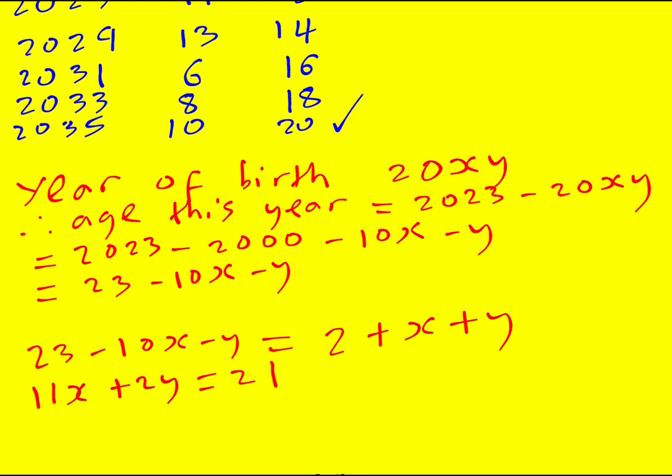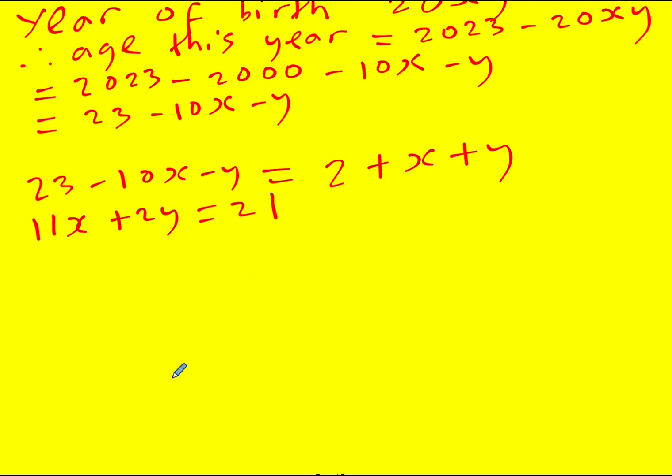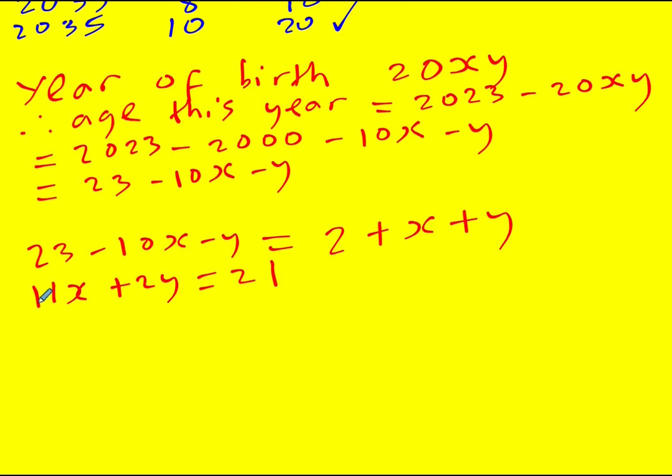Now remember x and y are single digits. It can't possibly be that x is zero, it also can't possibly be that x is two because it would be too big. They have to be positive, so x is going to have to equal 1 to give 11, and then y is going to have to equal 5. And we figured out without trial and improvement that her birth date must be 2015.